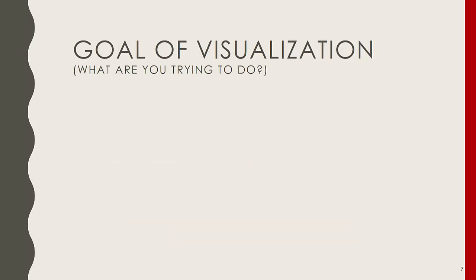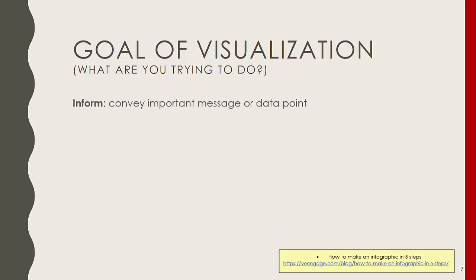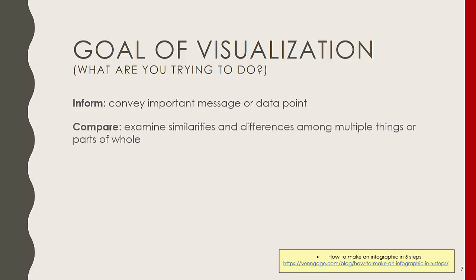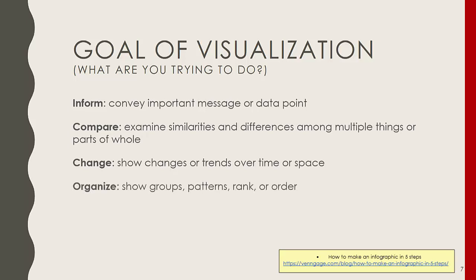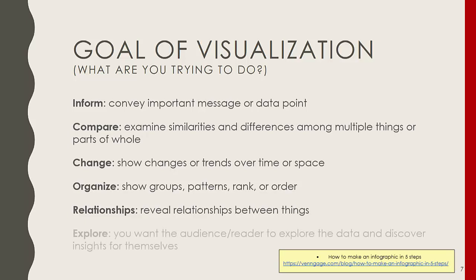Another way to visualize your data is by the goal of visualization — essentially, what are you trying to do with your data? The goal of your visualization could be to inform, which is to convey an important message or data point; to compare, examining similarities and differences among multiple things or parts of a whole; to show change or trends over time or space; to organize, showing groups, patterns, rank, or order; to explore relationships, revealing relationships between things; or to let the audience explore the data and discover insights for themselves.